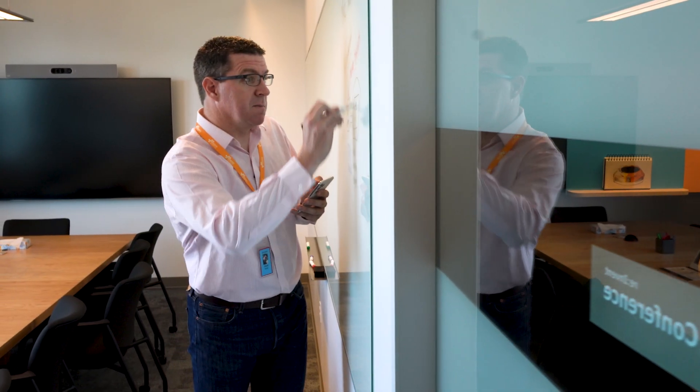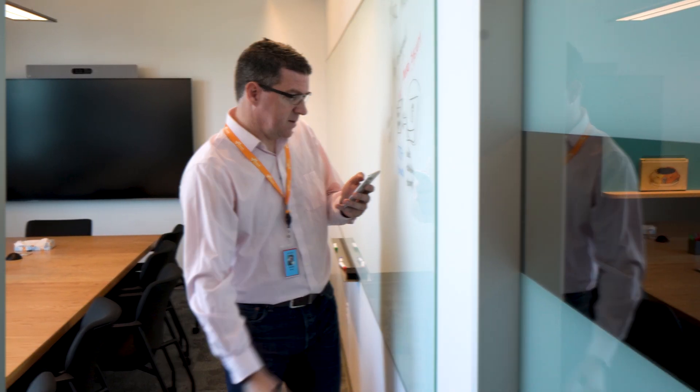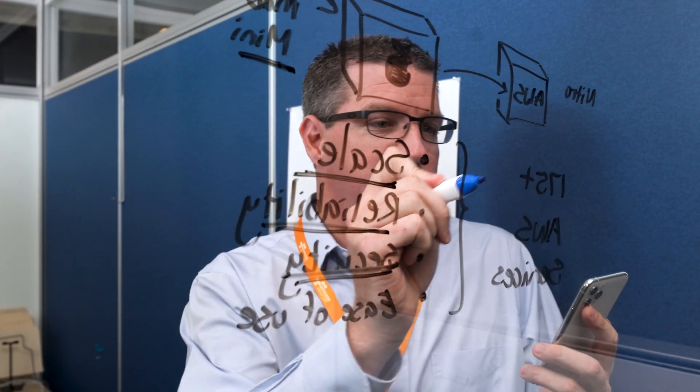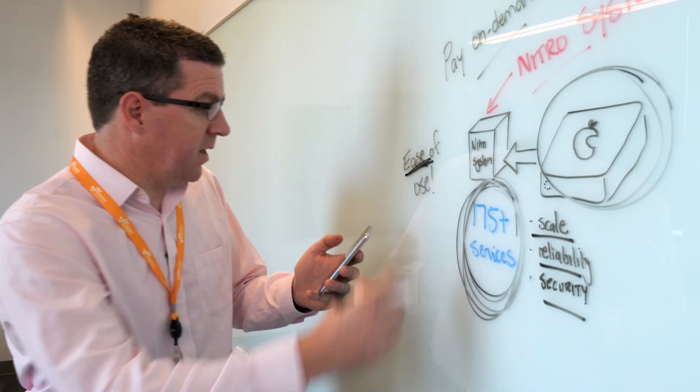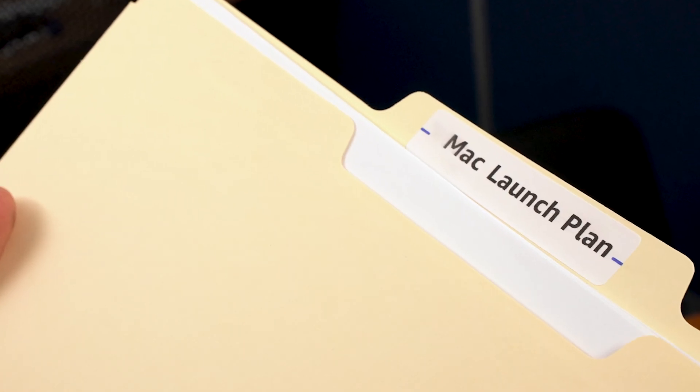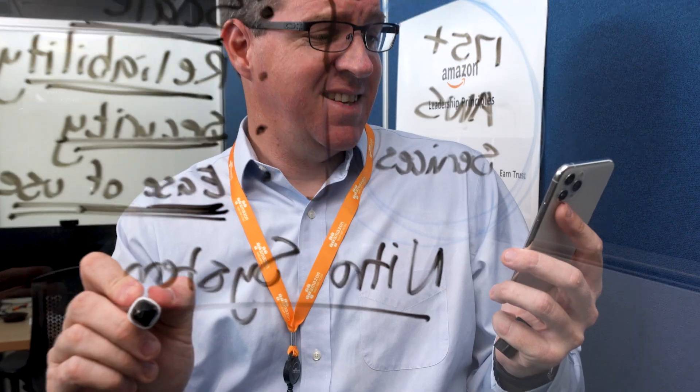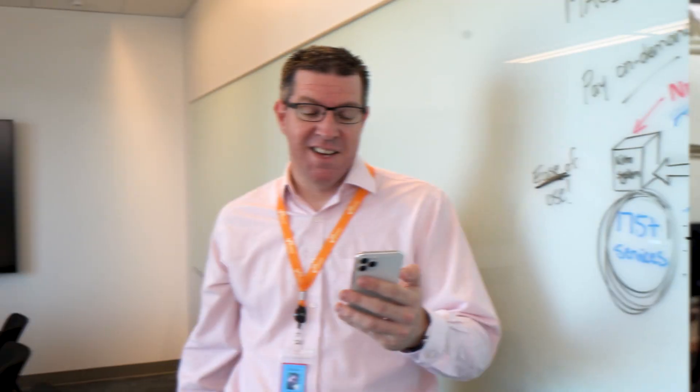What if we could build a new EC2 instance that runs macOS? With the scale, reliability, and security of AWS. Access to AWS services to make it easier for developers. Run on Apple hardware? Absolutely. Haven't you heard of Nitro? We can do that. All I need is a truckload of Mac minis.